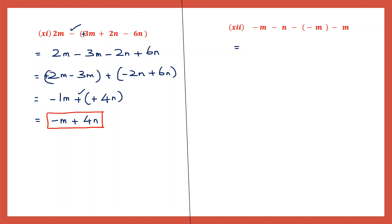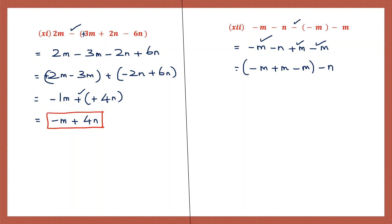Question 12: minus m minus n. Open brackets - before the bracket we have a minus sign, so the sign inside will change. So minus m will become plus m. Let's put all the m's together: minus m, plus m, and again minus m. And then we have a single minus n. Now minus m plus m will get cancelled, so what is left is minus m. And then we also have minus n. So our answer is minus m minus n.